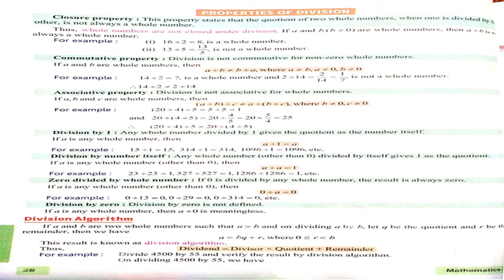Now next, division by 1: any whole number divided by 1 gives the quotient as the number itself. If A is any whole number other than 0, then A divided by 1 equals A. See the example: 15 divided by 1 equals 15. If we divide 314 by 1, the answer is 314.